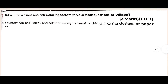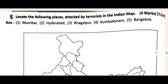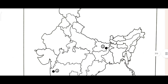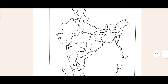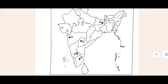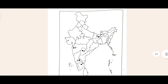Then come to the seventh question and answer. After that is the eighth question: locate the places attacked by terrorists on the India map — Mumbai, Hyderabad, Bhagalpur (which is in Bihar), Bangalore, and Tamil Nadu. These are the places where terrorist attacks took place. You can locate these on the India map.